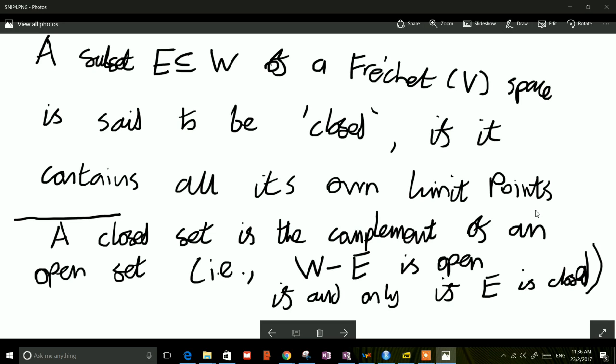In other words, if you take some closed set E, then the set of all elements of W other than E will form an open set and vice versa. And so now we can use limit points to understand what closed sets are.